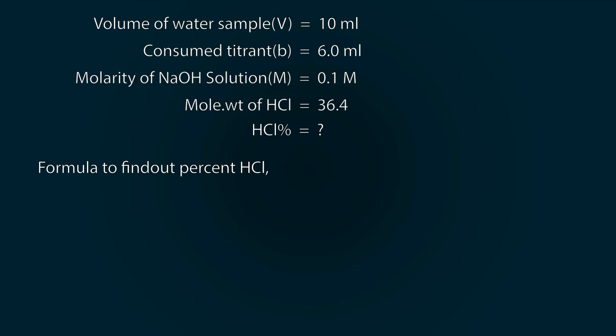For that we have to use the formula. The percentage of HCl equals molarity of solution multiply by consumed titrant multiply by 36.4, which is the molecular weight, divided by volume of water sample multiply by 1000 to convert this volume into dm cubed, whole multiply by 100 to convert it into percentage.